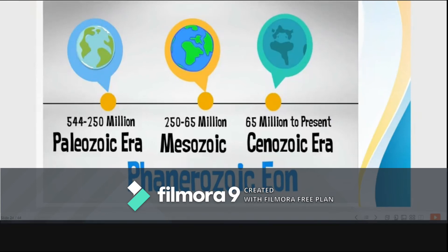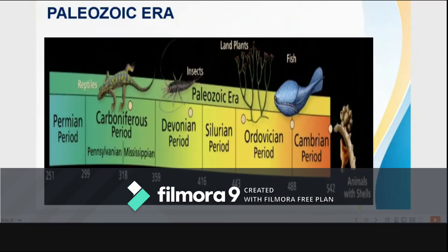The Phanerozoic consists of three major divisions: the Cenozoic, Mesozoic, and Paleozoic eras. The 'zoic' part of the word comes from the root 'zoo,' which means animal. 'Cen' means recent, 'meso' means middle, and 'paleo' means ancient. These divisions reflect major changes in the composition of ancient faunas, each era being recognized by its domination by a particular group of animals. The Cenozoic has sometimes been called the age of mammals, the Mesozoic the age of dinosaurs, and the Paleozoic the age of fishes.